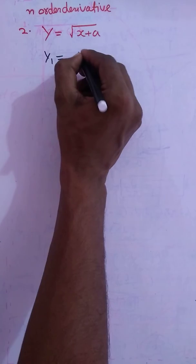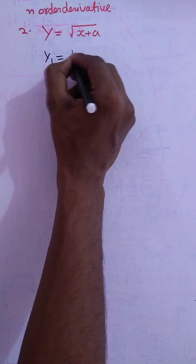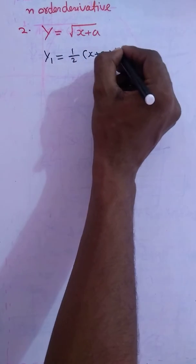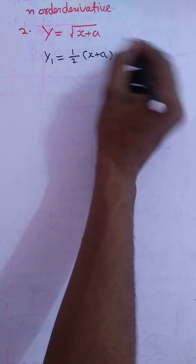then y1 will be equals to 1 by 2 times (x plus a) to the power minus 1 by 2.